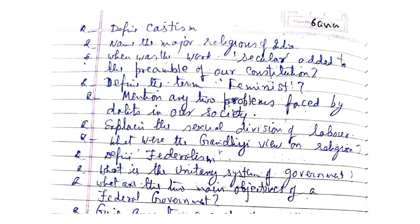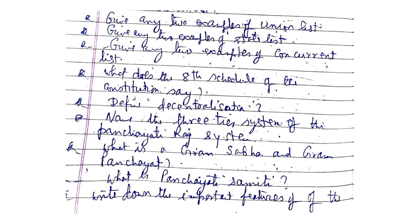Explain the sexual division of labor. What were Gandhiji's views on religion? Define federalism. What is the unitary system of government? What are the two main objectives of a federal government? Give any two examples from the Union List, the State List, and the Concurrent List.